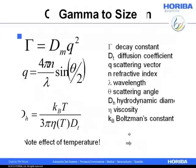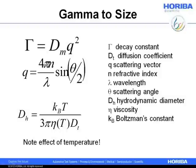The decay constant gamma relates to the mutual diffusion coefficient D and q-squared, where q is a scattering vector summarizing the scattering angle, wavelength, and refractive index of the liquid. The hydrodynamic diameter is then found from the Stokes-Einstein equation: D equals k_B times T divided by (3π times η times d_H), where k_B is Boltzmann's constant, T is temperature, η is viscosity, and d_H is hydrodynamic diameter. Note the strong effect of temperature on suspending medium viscosity — something to be very aware of when making measurements.